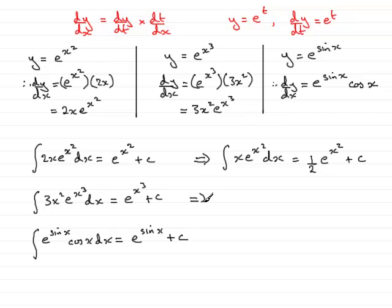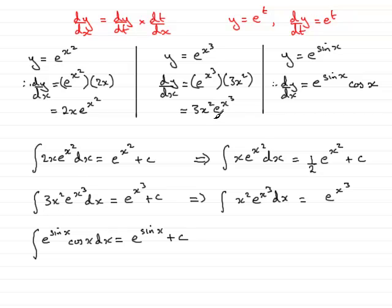Try this one: the integral of x squared e to the x cubed dx. This must have come from differentiating e to the x cubed, which gives 3x squared e to the x cubed. Because there's no 3 at the front, I need to divide it out, so I put a third there: one third e to the x cubed plus c.